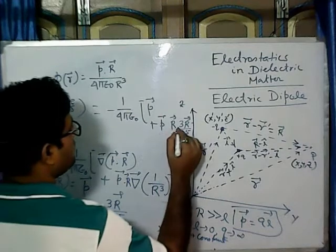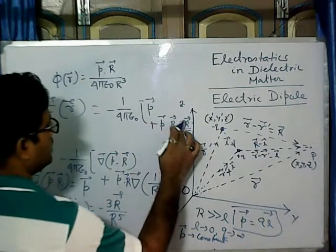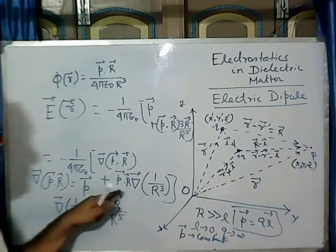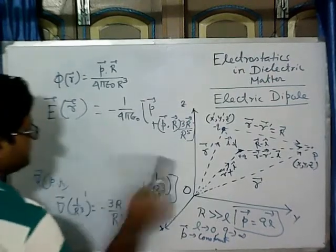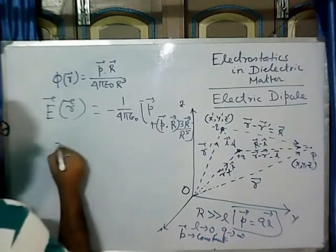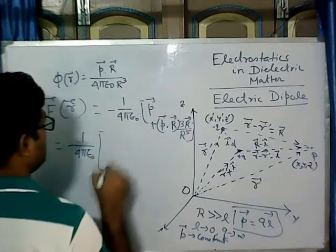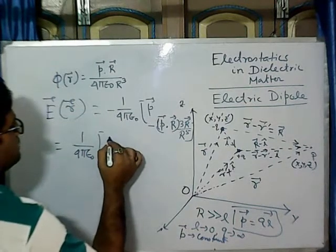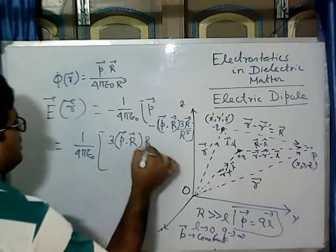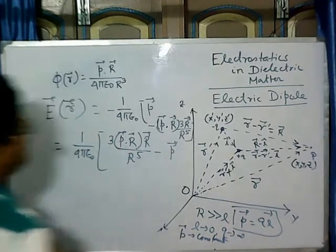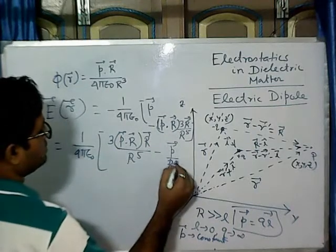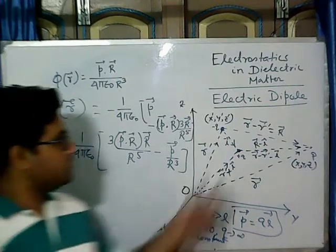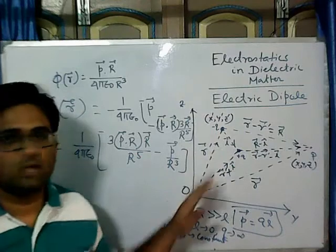So if we do this dot product operation here, the dot product of the dipole moment with R gives P dot R hat at angle theta. It becomes 1 by 4π epsilon naught, and absorbing the minus sign from minus 3R, it becomes: 3(P dot R) R hat by R to the power 5, minus P by R cubed. This is the form of the electric field in general, when our dipole moment is in an arbitrary orientation.